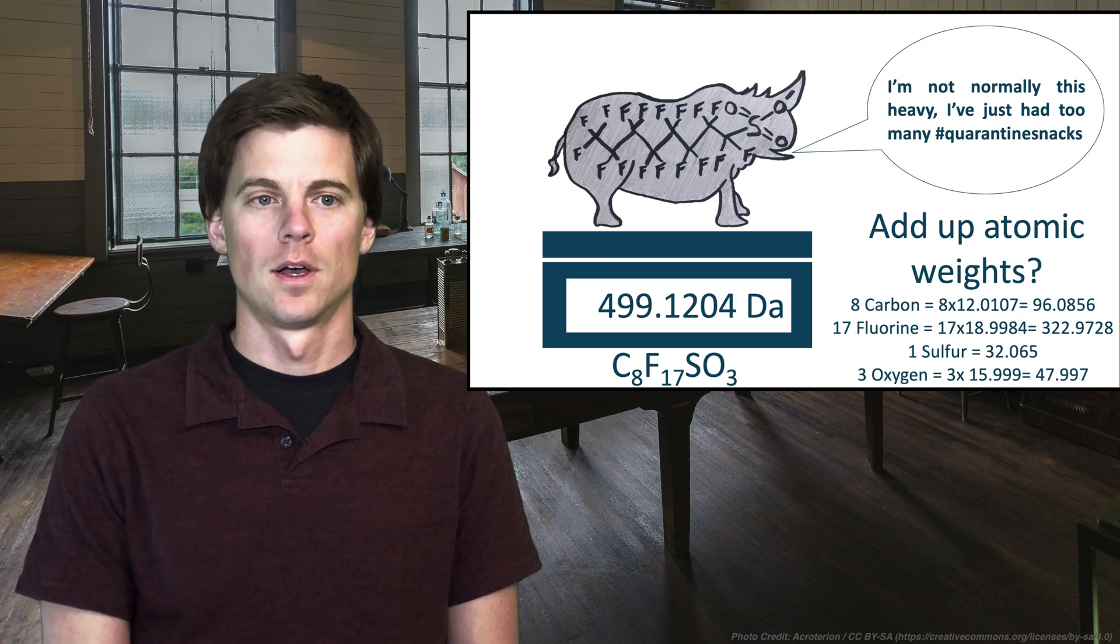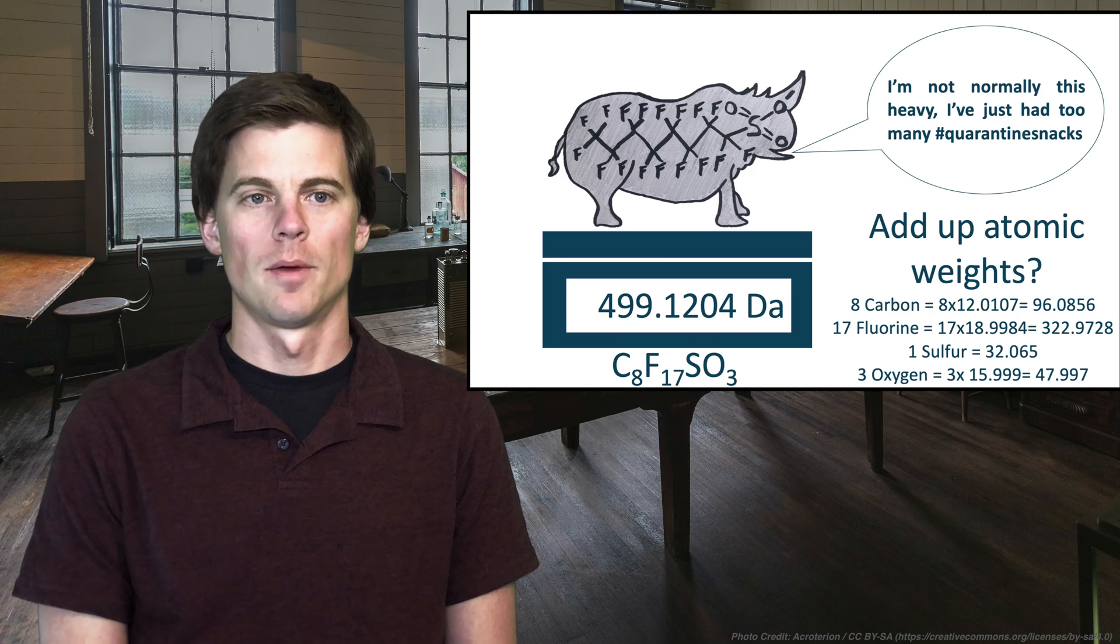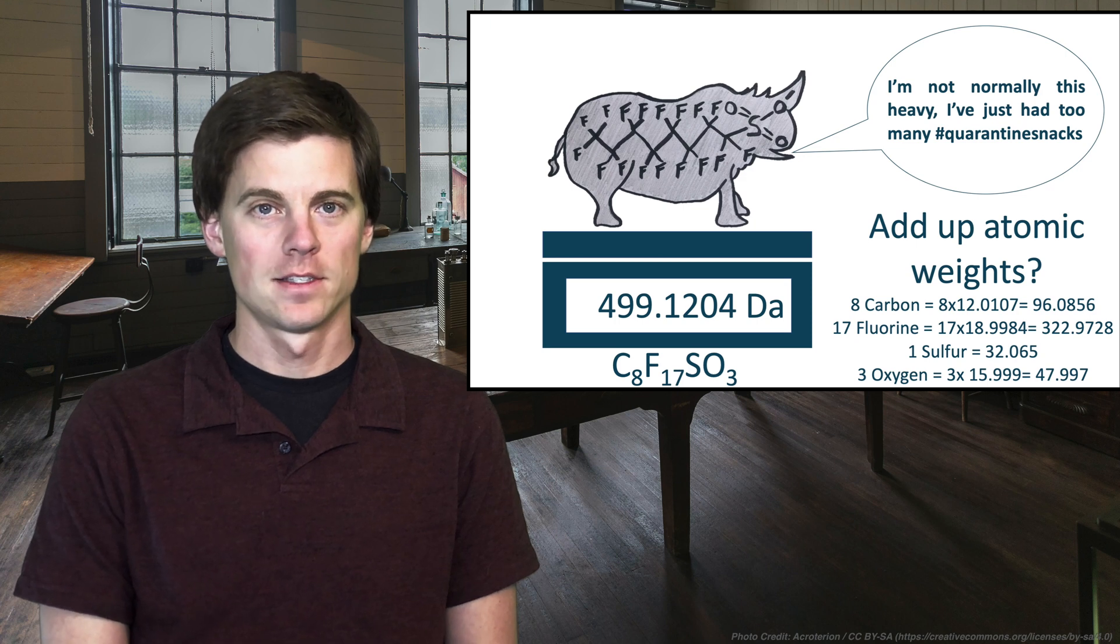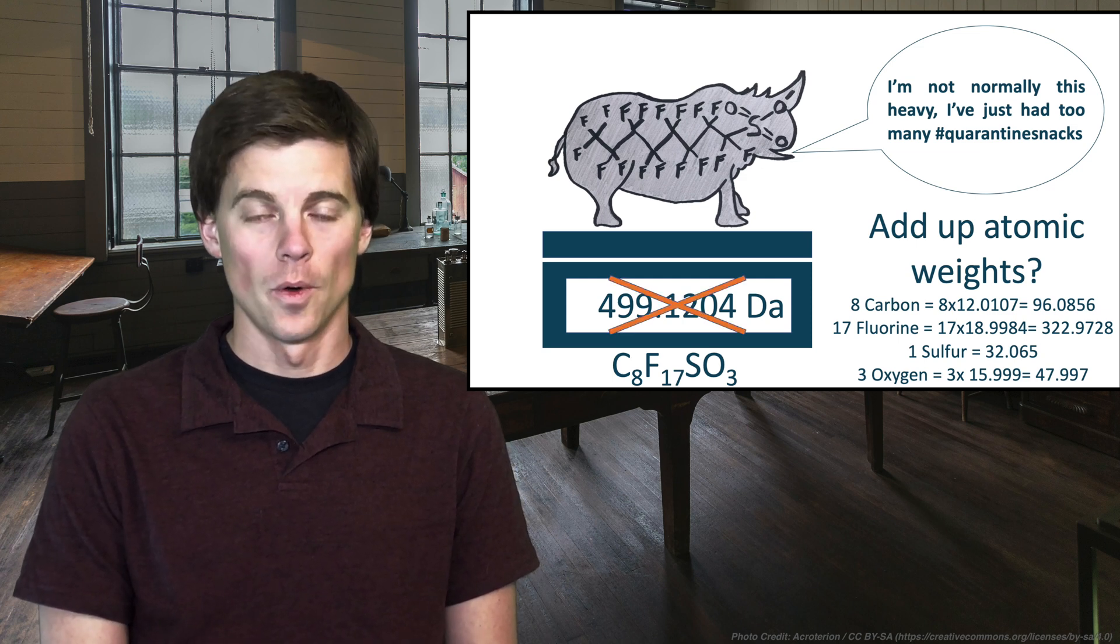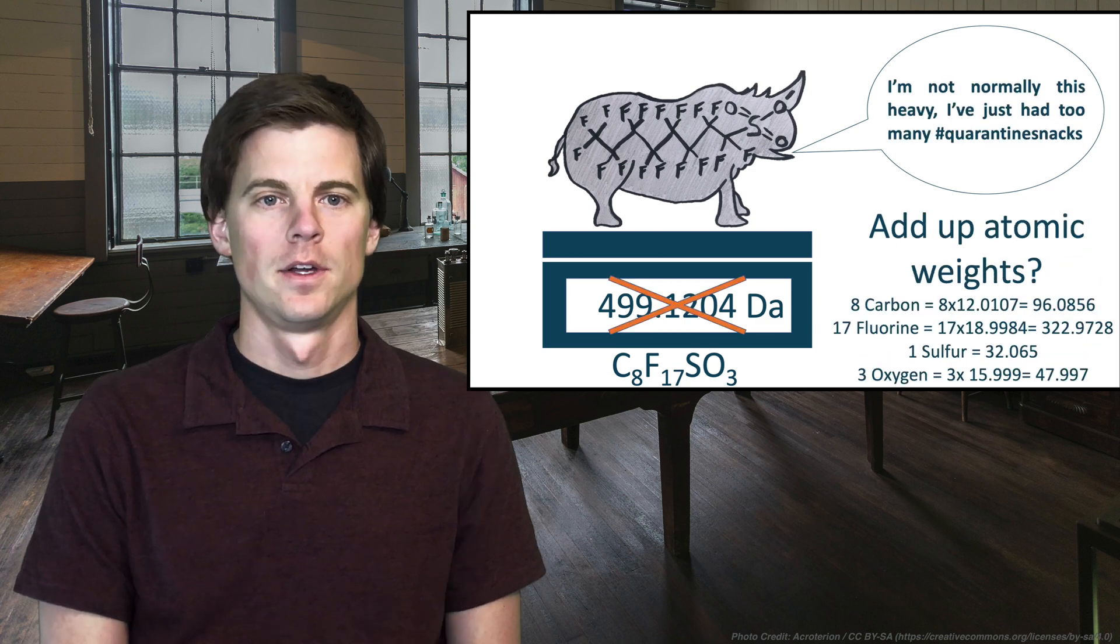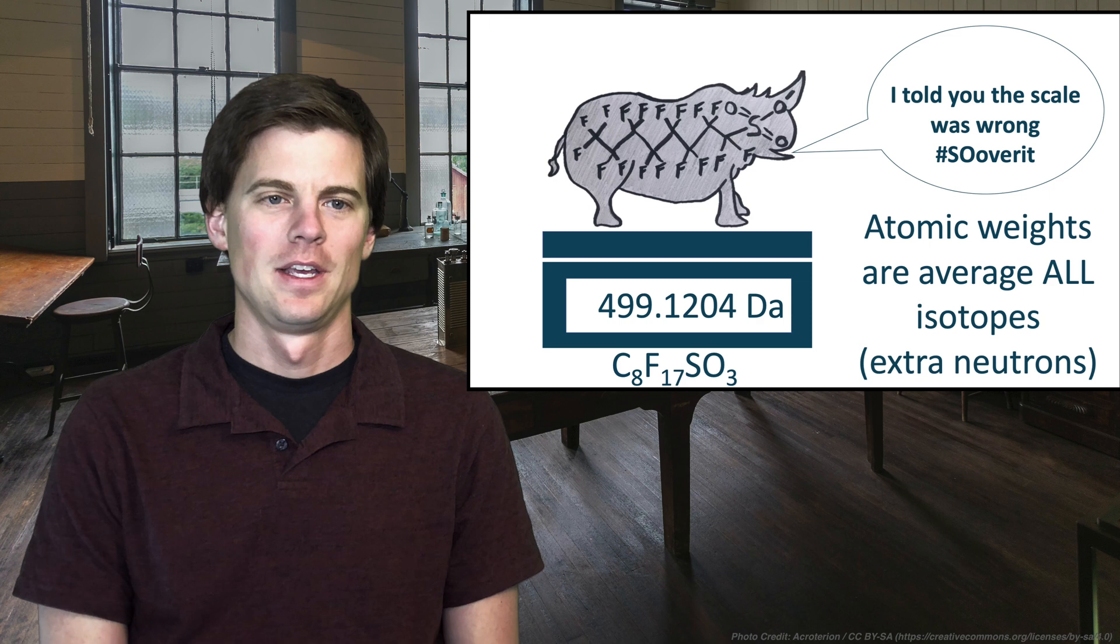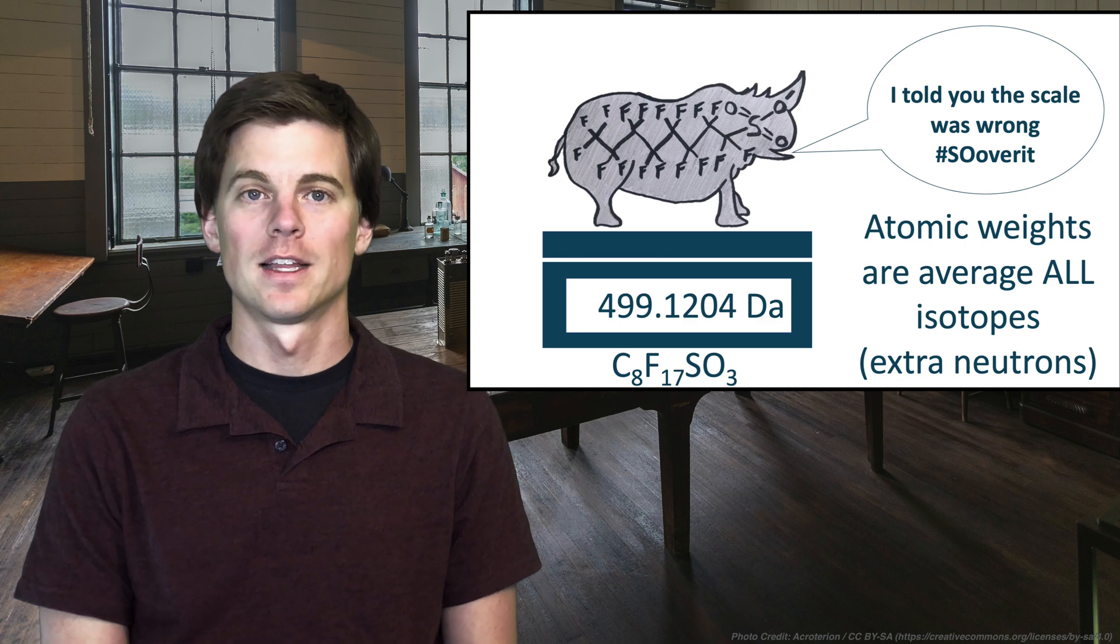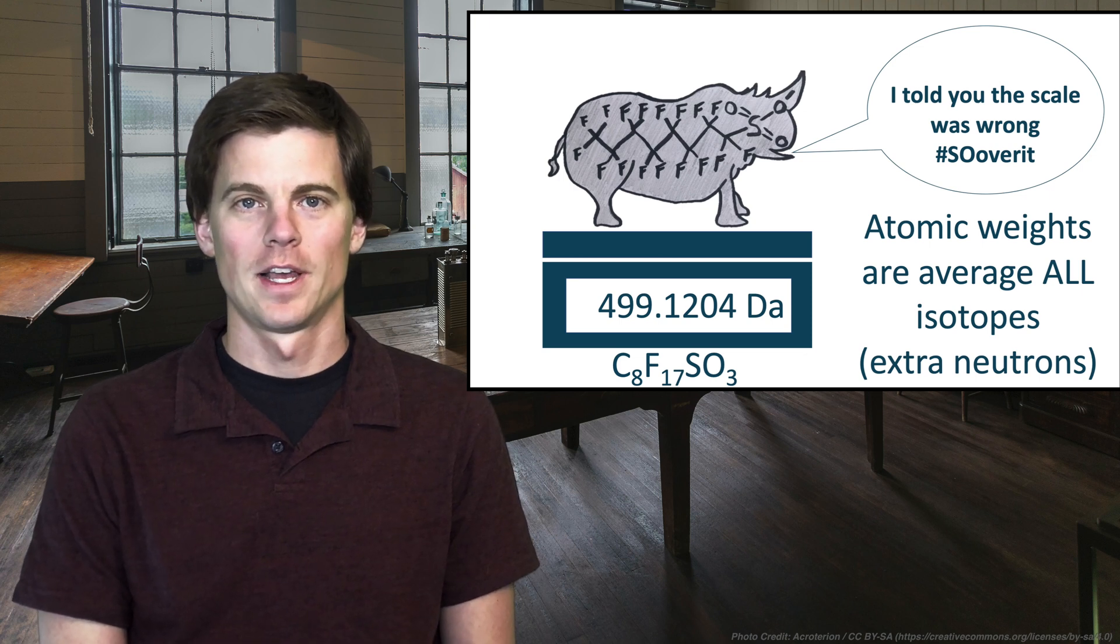So eight carbons, 17 fluorines, a sulfur and three oxygen. If you add up their atomic weights, you come up with a number of 499.1204. So is that the correct atomic mass of PFAS the way we'll see him in mass spectrometry? The answer is no. There's a few reasons. But when you just add up the atomic masses, you will get what we call an average mass. It's kind of like this is the average of all the things you'll measure. PFOSaurus being sassy again, told you the scale was wrong. Hashtag so over it.